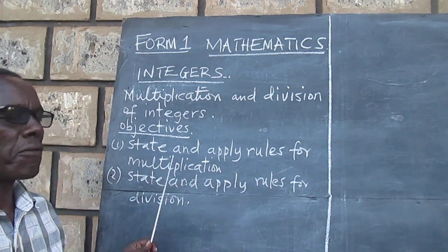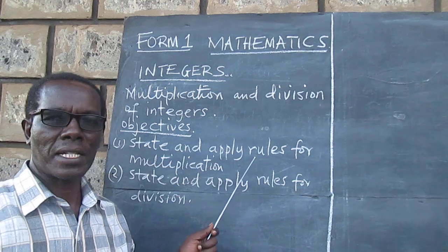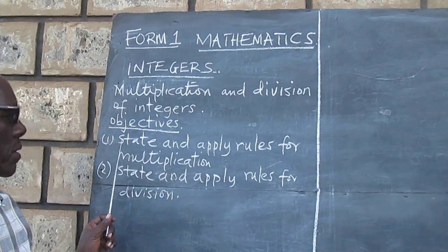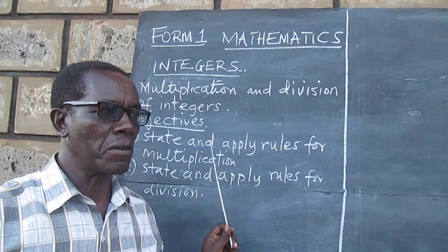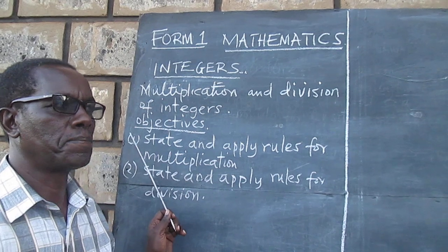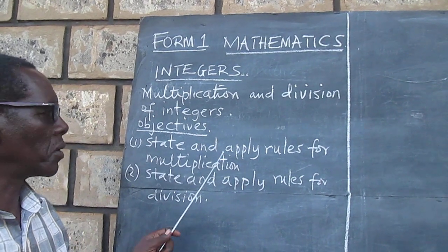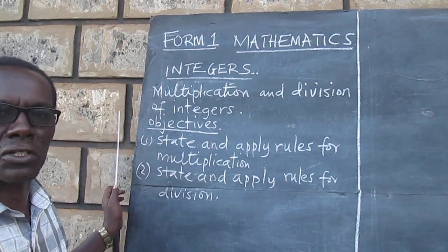Now, for us to multiply and divide integers, some rules have to be followed. Let us look at the rules for multiplication.